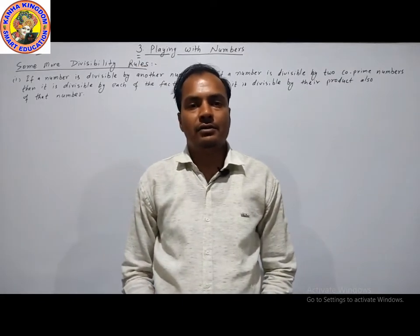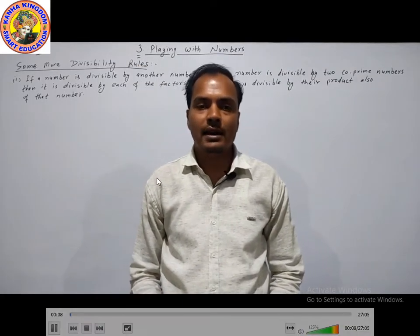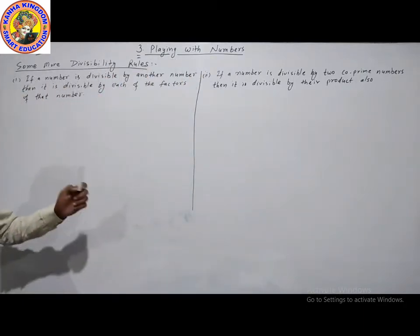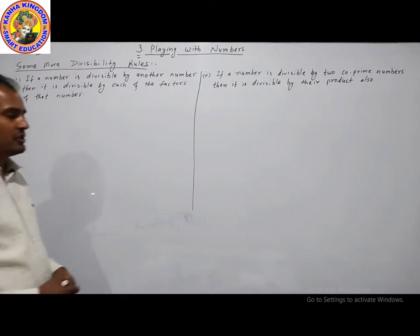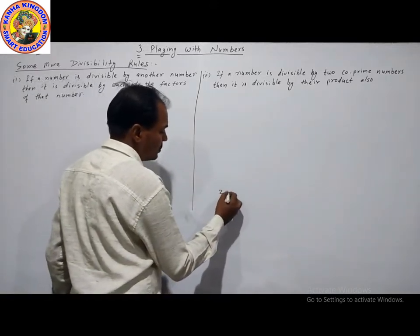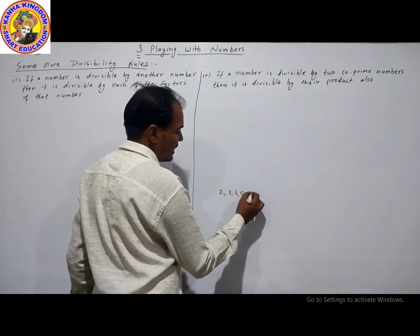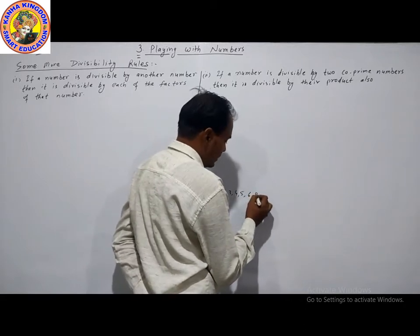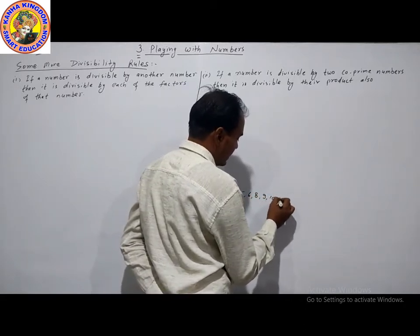Dear students, welcome to Kana Kingdom Smart Education Online Classes. Chapter number 3, Playing with Numbers. In this chapter, we will read the divisibility rules of 2, 3, 4, 5, 6, 8, 9, 10, and 11.